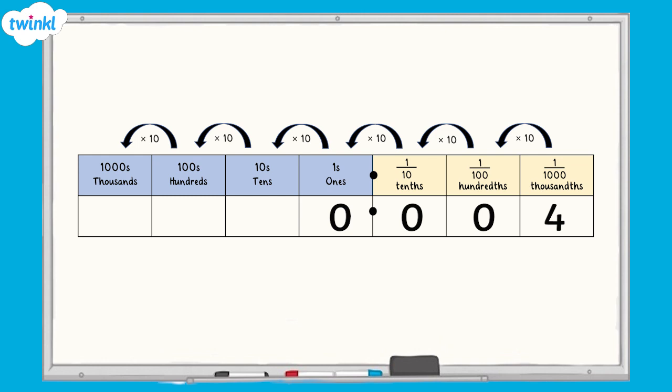As we move left across the place value chart, each column is worth 10 times more than the column before. So as the 4 moves across each column, its value becomes 10 times bigger, from 4 thousandths, to 4 hundredths, to 4 tenths, to 4 ones, to 4 tens, to 4 hundreds, to 4 thousands, and so on.